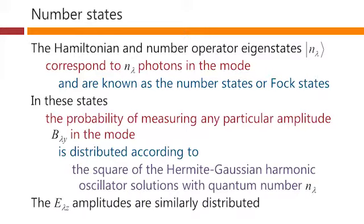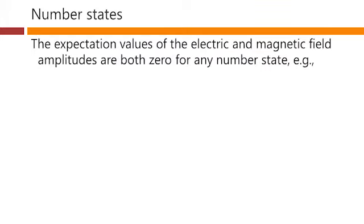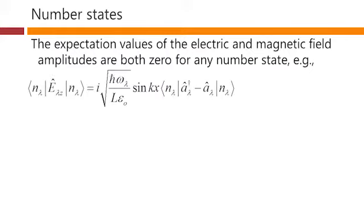The amplitudes of the electric field e_λz, the z-component, are distributed in a similar way based on the same functions. Now, if we ask for the expectation values of the amplitudes of these modes — either the electric or magnetic amplitudes — we will find that those are both zero for any number state. Formally, we want to find the expectation value of the electric field in the z-direction, the amplitude of that mode, given that we're in state |n_λ⟩, that is, n photons in mode λ. So we formally evaluate the expectation value using the operator for the electric field amplitude in this mode.